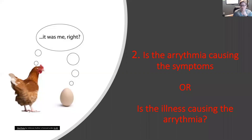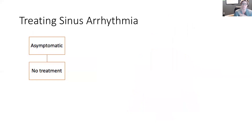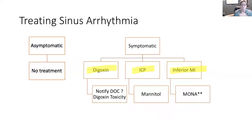Here's part of the key question: is the arrhythmia causing the symptoms, or is the illness causing the arrhythmia? That secondary question helps identify whether your treatment is relevant to the care. In terms of treating sinus arrhythmia — if asymptomatic, no treatment. Just note it, and let the patient know so if they're home checking their pulse and notice it's fast then slow, they can do a self-assessment to see if it's related to their breathing. If symptomatic — for example digoxin toxicity — we give digibind and may also give atropine to increase the heart rate.